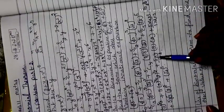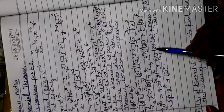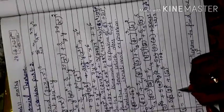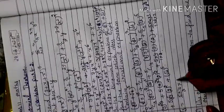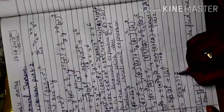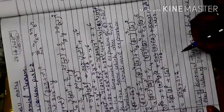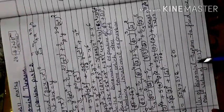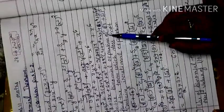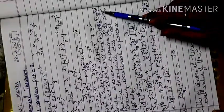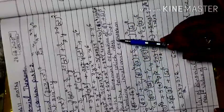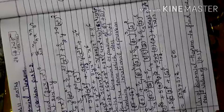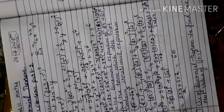So the third term is: 5C2 · 3 · 2 = (5·4)/(1·2) · 3 · 2 = 10 · 6 = 60. The value of the rational term in the binomial expansion of (∛3 + √2)⁵ is 60, which is the third term.